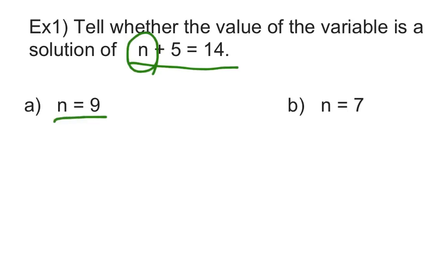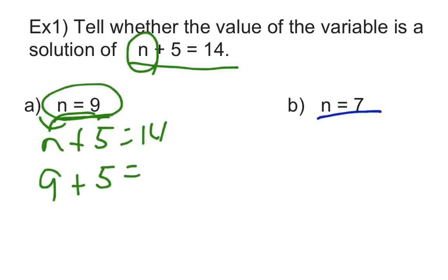And in a and b, they're simply telling us, they're giving us possibilities of what it could actually be. In part a here, they're saying that n might equal 9. And we basically have to say, is that true or is that not true? And then the same thing over here for part b, where they're trying to tell us that n equals 7. And again, it says, tell whether the value of the variable is a solution. They're saying, is it an answer? So that's what we're going to find out. So when they give me here, n plus 5 equals 14. And then they're trying to tell us that n equals 9. Well, we're going to check that out. We're going to put 9 in place of n and actually do 9 plus 5. And we're going to see if it equals 14.